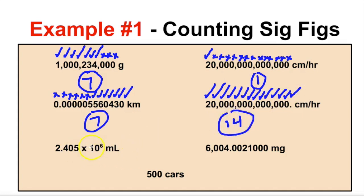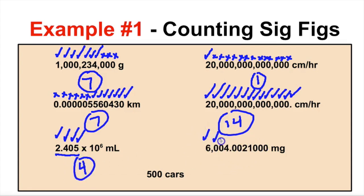For the scientific notation example, we only look at the mantissa. We have one, two, three, and a captive zero for four sig figs. For the next number: the six is significant, captive zeros count, the four counts, more captive zeros count, the two and one count, and the trailing zeros count because there's a decimal. Counting gives us eleven sig figs.